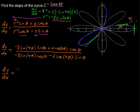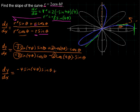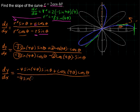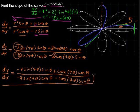Factoring out and canceling a 2 from everything, the final answer is: negative 4 sine of 4 theta times sine of theta, plus cosine of 4 theta times cosine of theta, all over negative 4 sine of 4 theta times cosine of theta, minus cosine of 4 theta times sine of theta. That's the slope at any given theta.